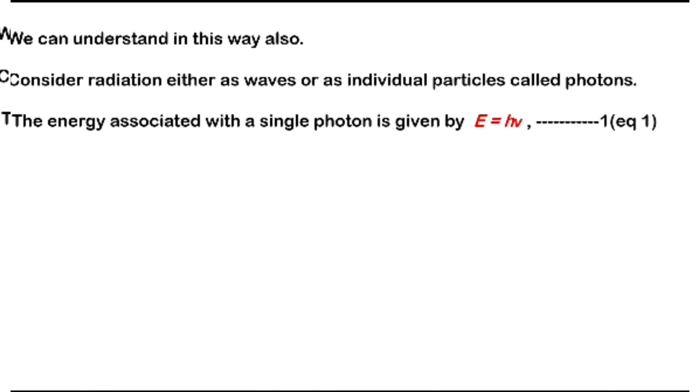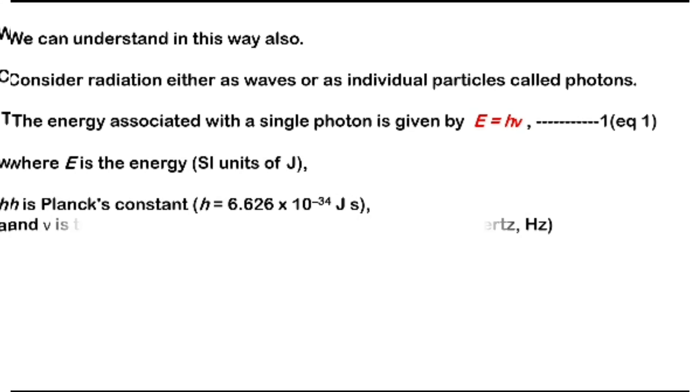We can understand in this way also. Consider radiation either as waves or as individual particles called photons. The energy associated with a single photon is given by E equals h nu, where E is energy in SI units of joules, h is Planck's constant, and nu is the frequency with SI unit of per second or hertz.